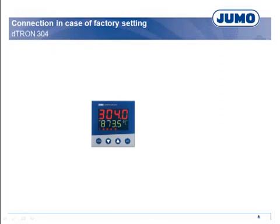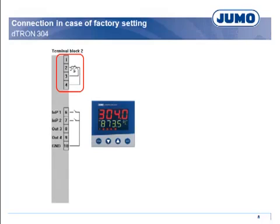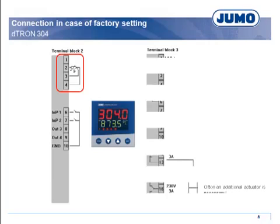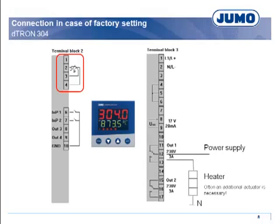The factory setting of the controller configuration is suitable for the following application: measurement of a temperature at input 1 of the controller with a RTD temperature probe PT100 and 3-wire circuit, temperature control as two-state controller, and control of the heater via the contact of output 1. In many cases, changing of the configuration is not necessary.